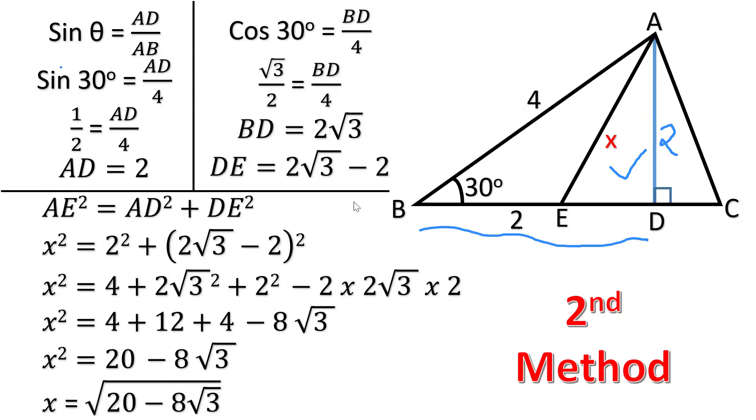So friends, these were the two different methods by which we can find out the median of the triangle which has two sides as equal and the angle is given. Thank you.